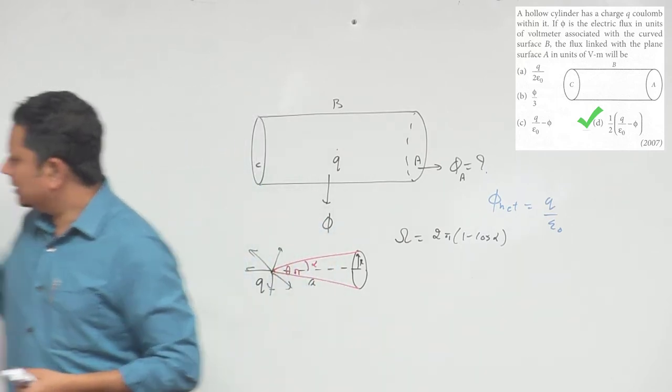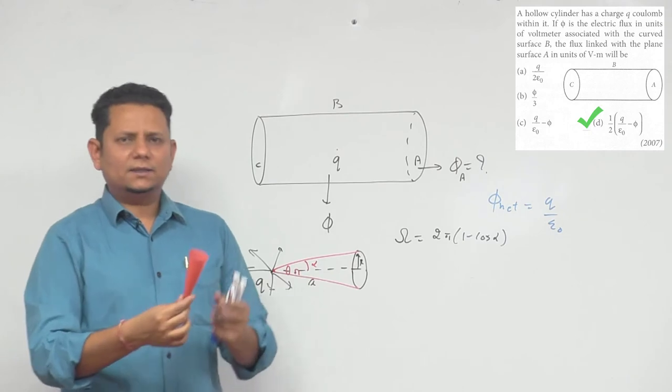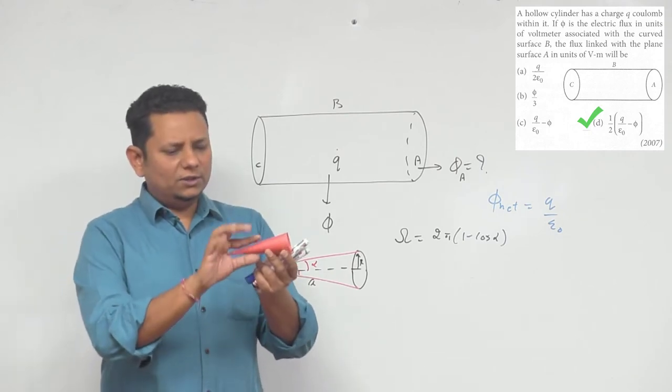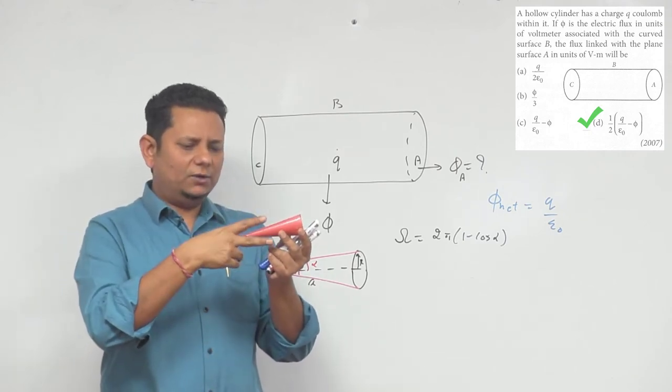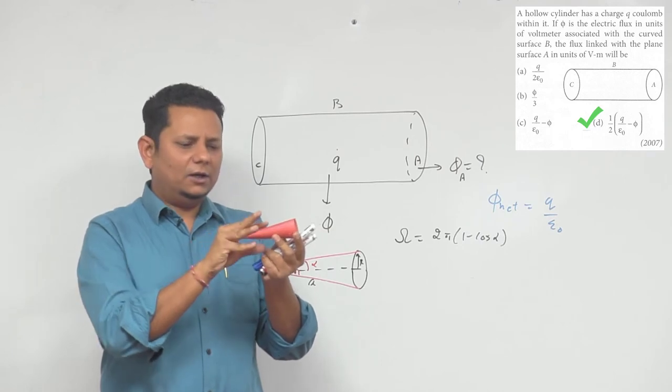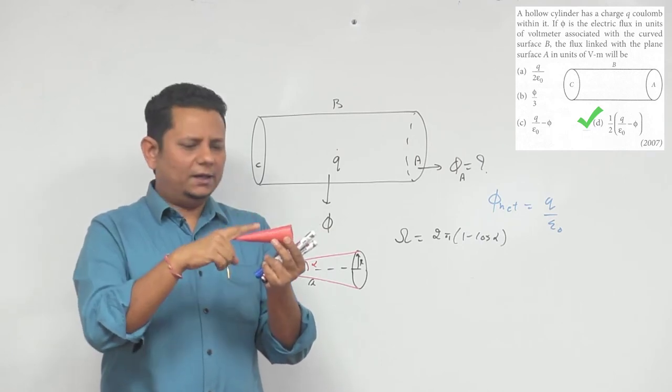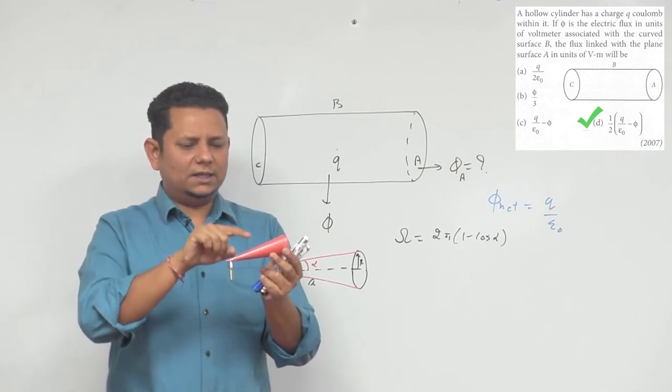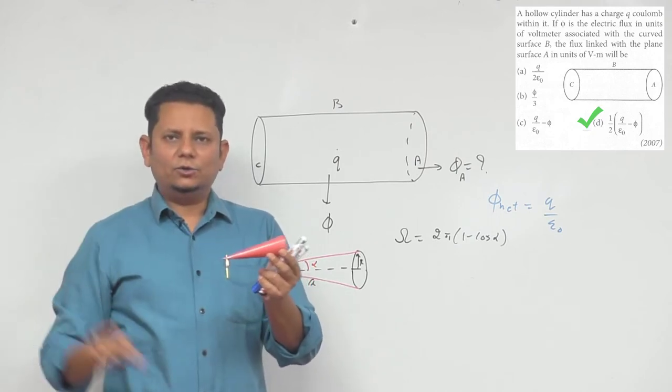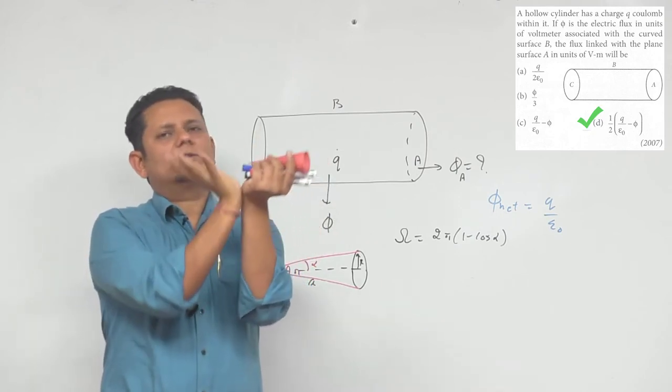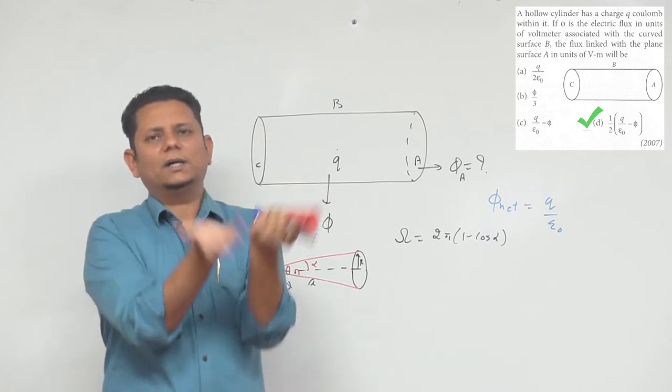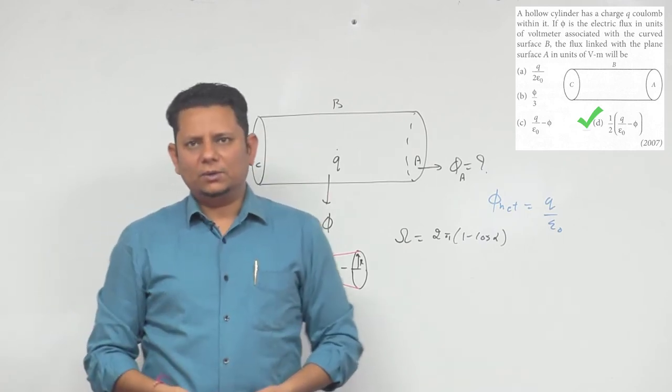To explain solid angle to you, I can demonstrate like this: suppose this is an ice cream cone. Its plane angle is the two-dimensional angle that comes between these two lines, and this is its solid angle. When we fully cover a circle, the plane angle covers 2π, and when we fully cover a sphere in three dimensions, the total angle is 4π.